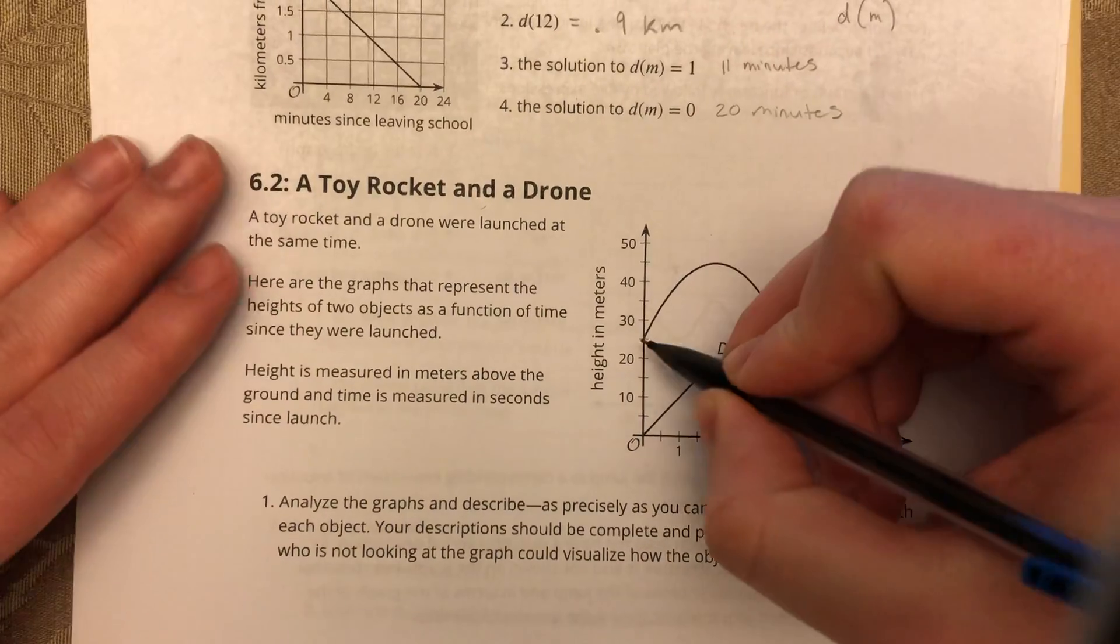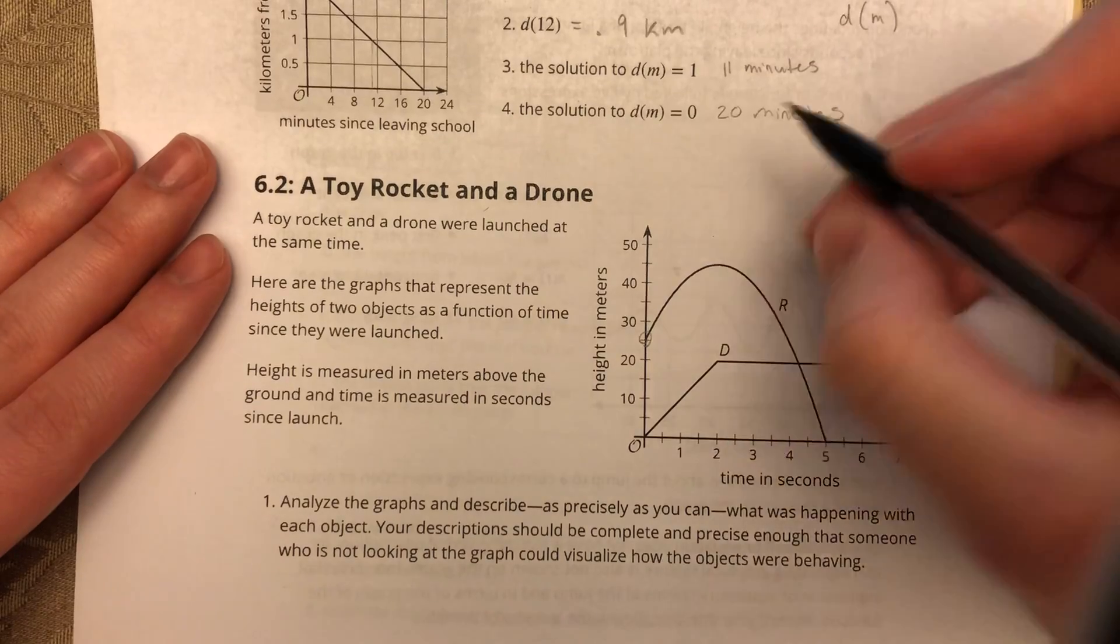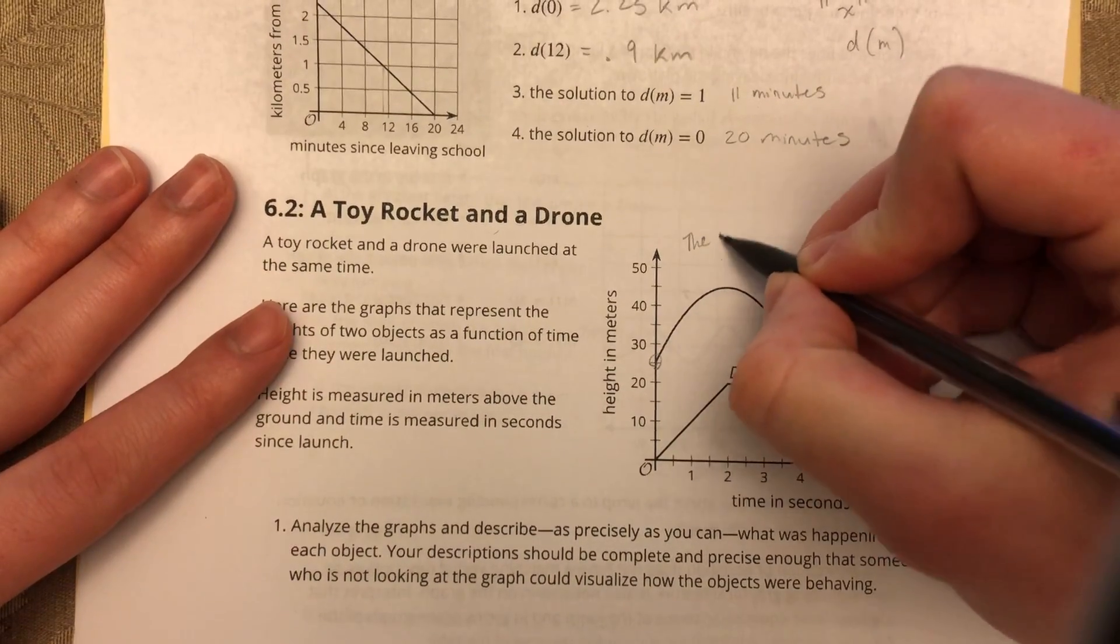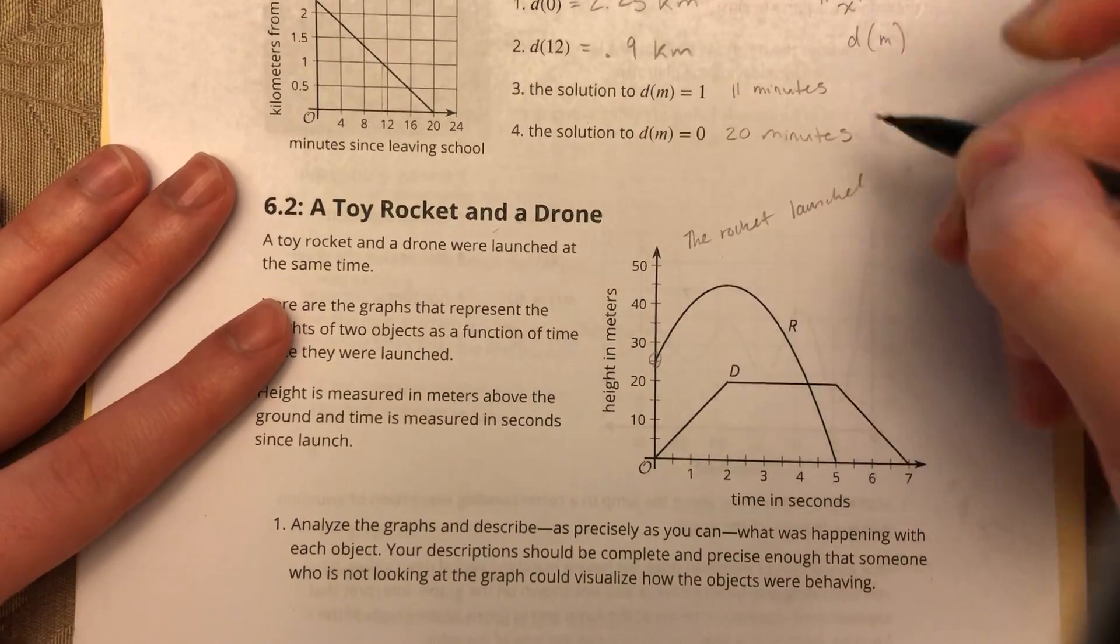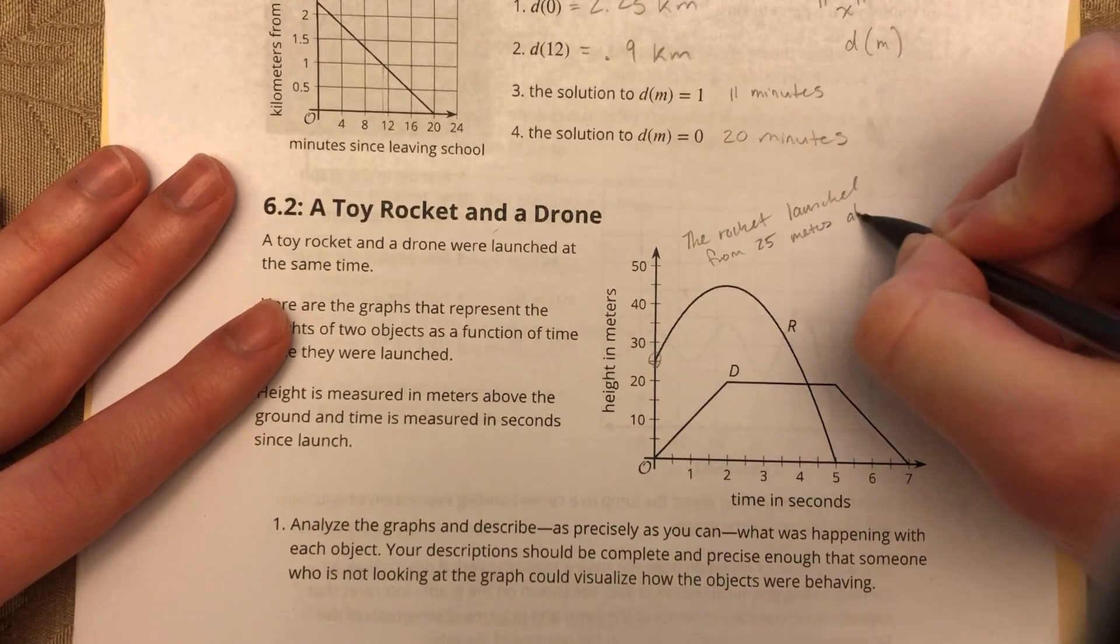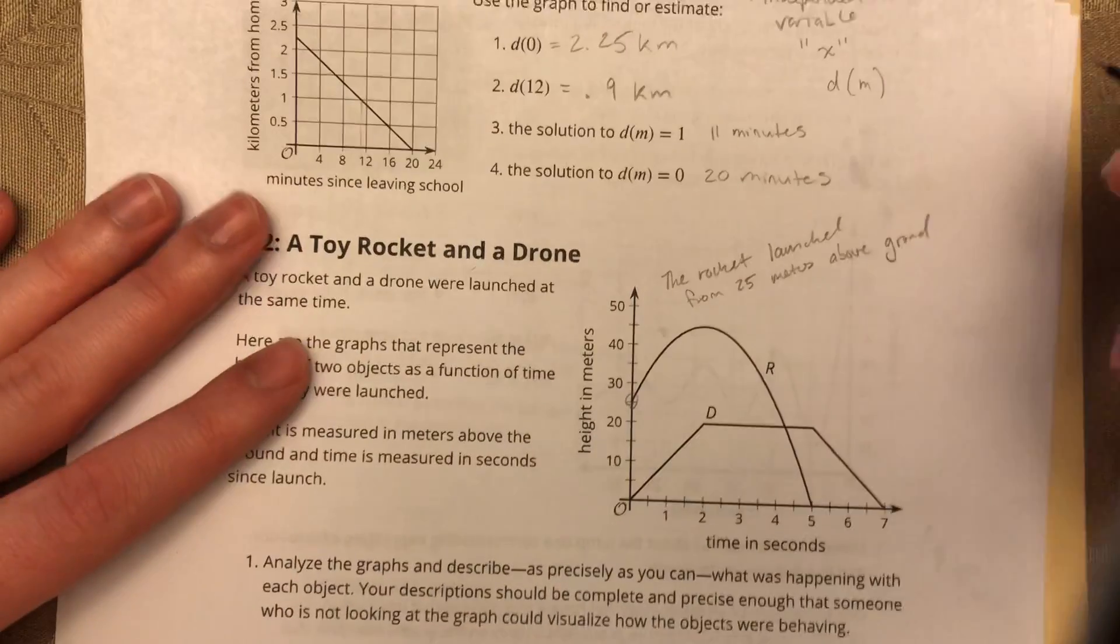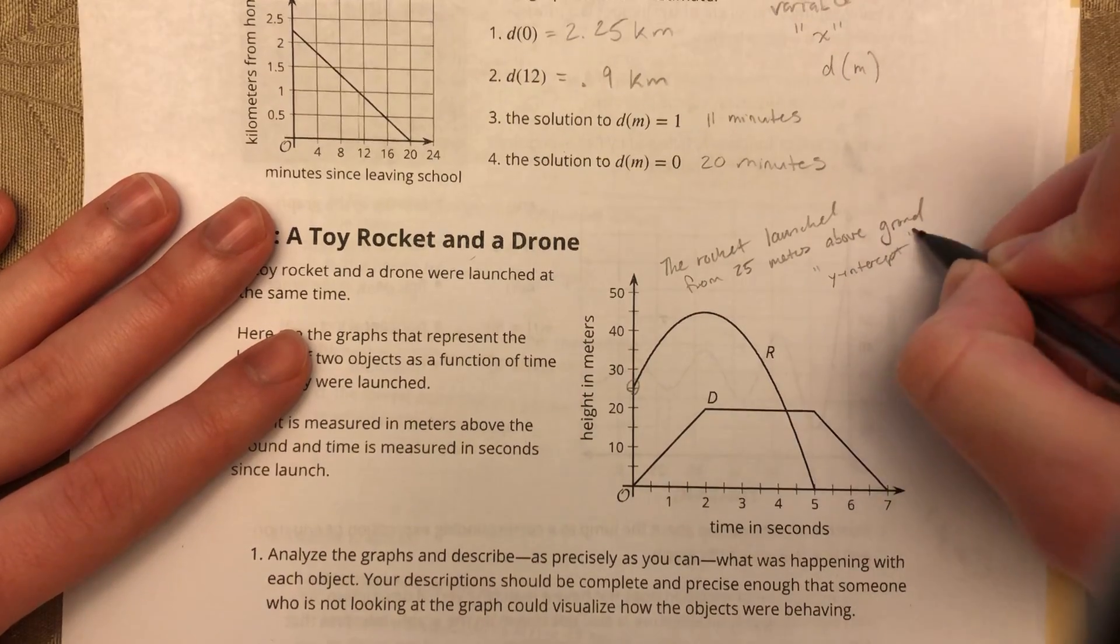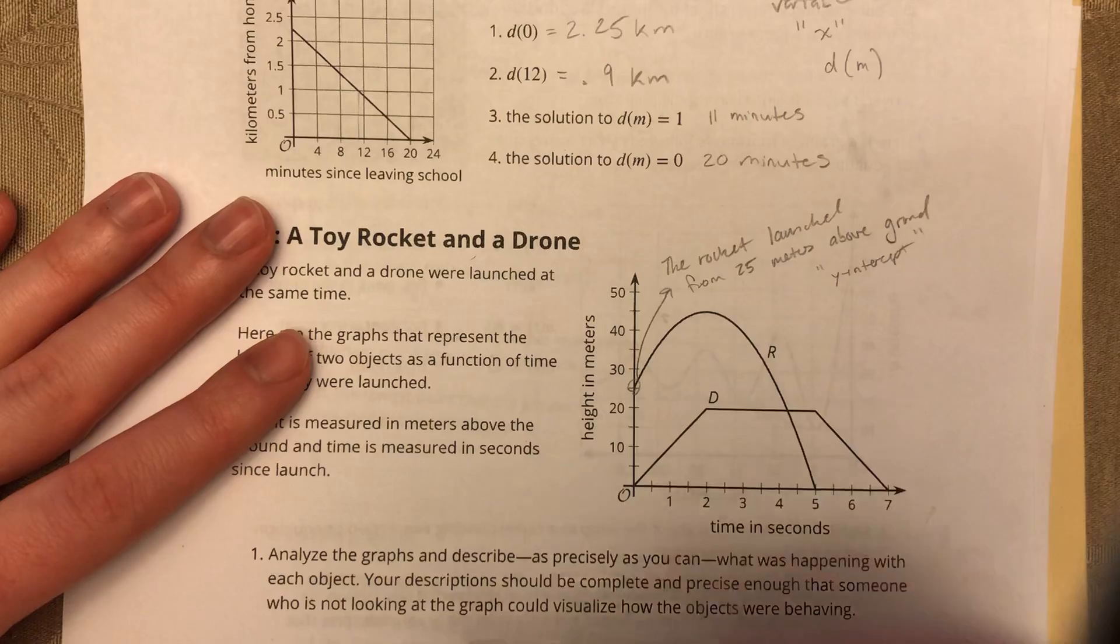Alright, so this first value here, if we're looking at R, the path of the rocket, that looks to be 25 meters. So I would say that the rocket launched from 25 meters above ground. And we know that's also known as y-intercept. And so that's this point right here.